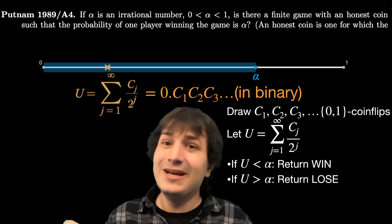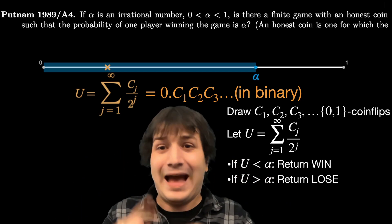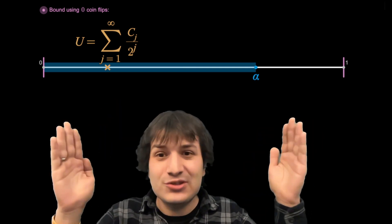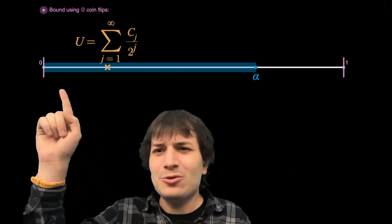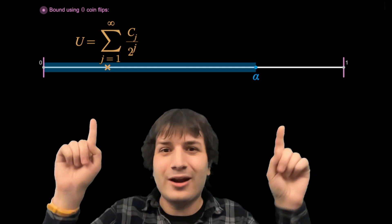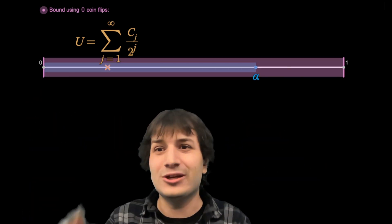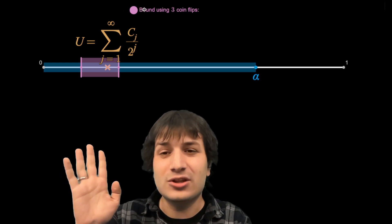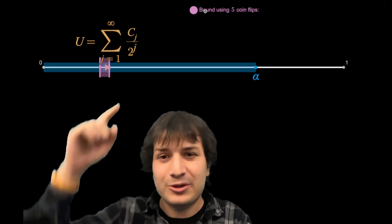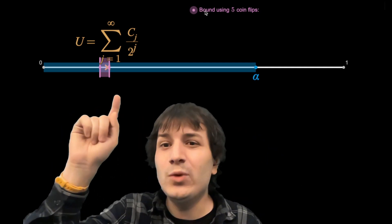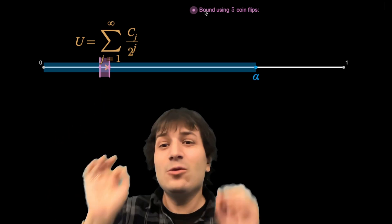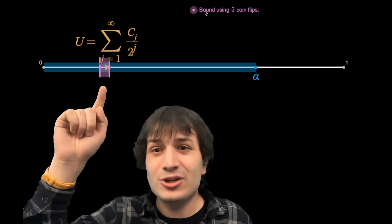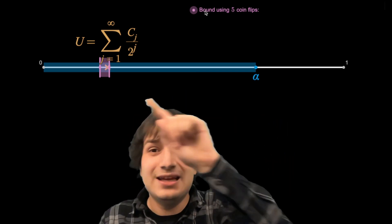It turns out you can tell if u is bigger or less than alpha just by looking at partial sums. You don't have to sum all the way to infinity — you can sum the first few terms and then you can tell. Instead of getting u exactly, we make a sandwich that traps u in some region. We start by saying u is definitely between 0 and 1. As you add more coins, this region shrinks down toward u. Using five coin flips, for example, you narrow u to a small enough region to tell definitively whether it's bigger or less than alpha.